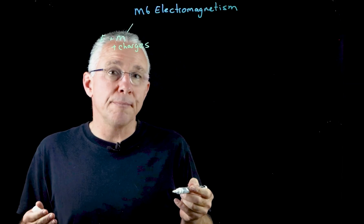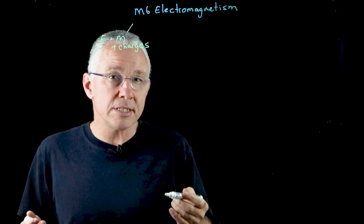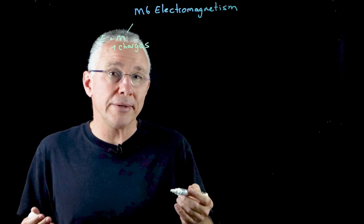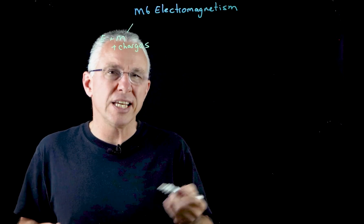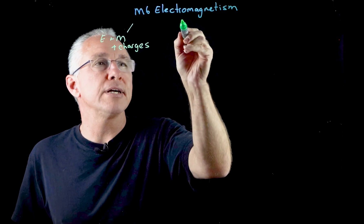The next inquiry question basically says under what circumstances is a force produced on a current bearing conductor in a magnetic field. In essence, it's the motor effect.